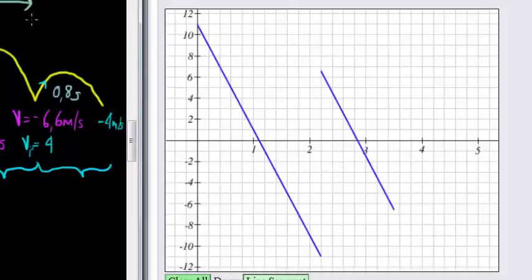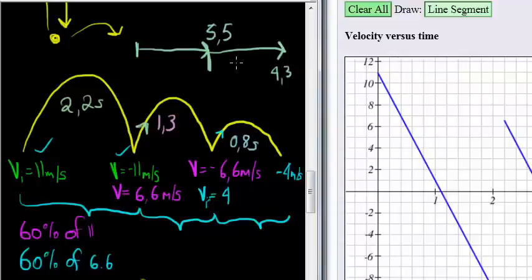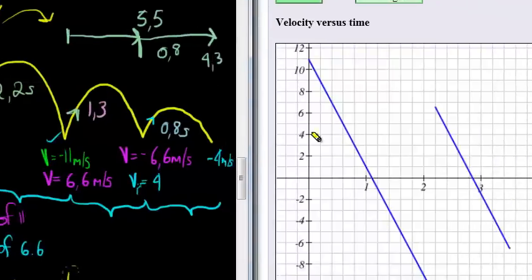Now I must go from 3.5 seconds, another 0.8 seconds. Now we know the total journey was 4.3 seconds. And that's because this last journey was 0.8 seconds long. So from 3.5 seconds to 4.3 seconds, I must go from 4 meters per second to negative 4 meters per second.